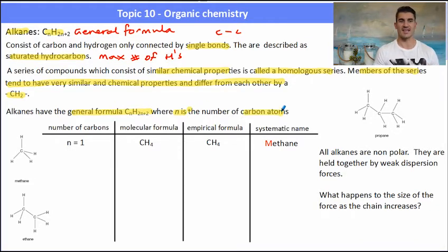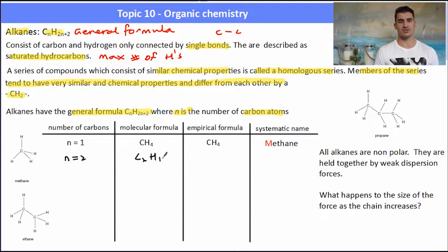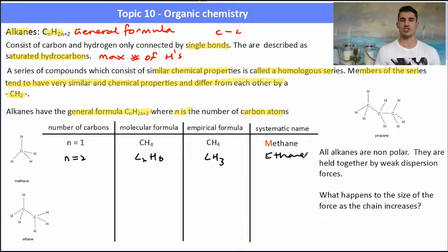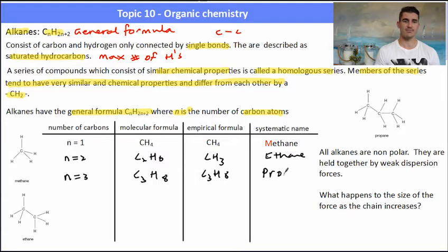Alkanes have the general formula CnH2n+2, where n is the number of carbon atoms. We can use that to work out the molecular formula, the empirical formula, and the name for each alkane. With one carbon, the molecular formula is CH₄ — known as methane. With two carbons, the molecular formula is C₂H₆; the empirical formula (the simplest whole ratio) is CH₃, and the second member is called ethane. The third member with three carbons has the formula C₃H₈ and is called propane.